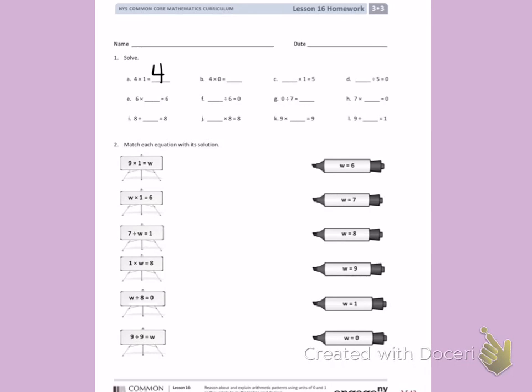Letter B, we also learned today that any number times 0 equals 0. So I see 4 times 0 equals 0. Letter C, blank times 1 equals 5. 5 times 1 equals 5. D, blank divided by 5 equals 0. Anything divided by 0 will equal 0.